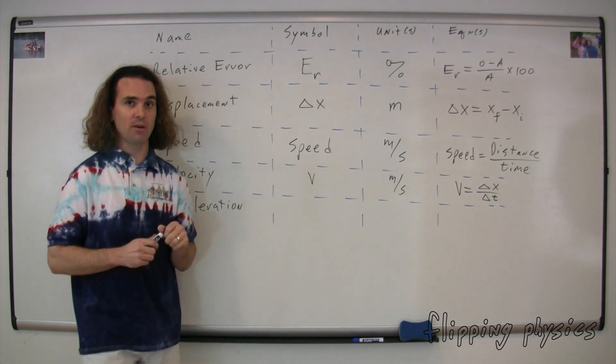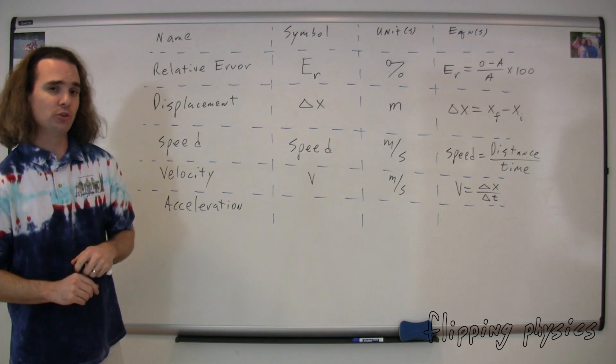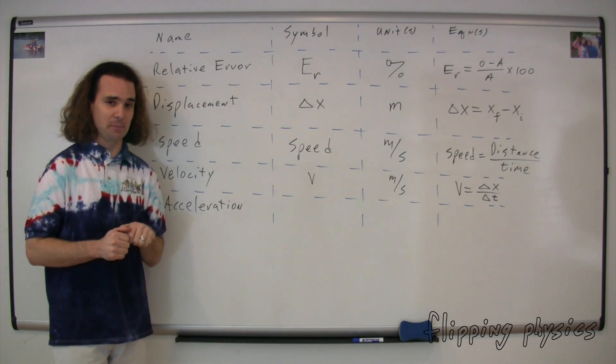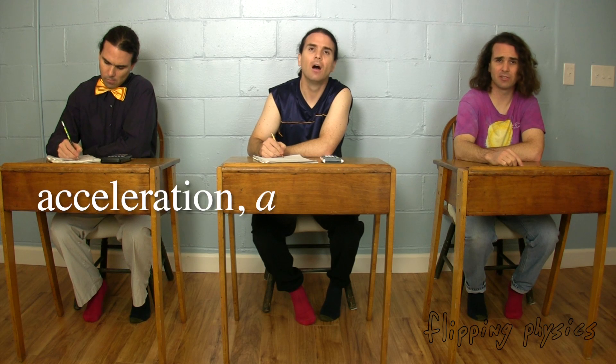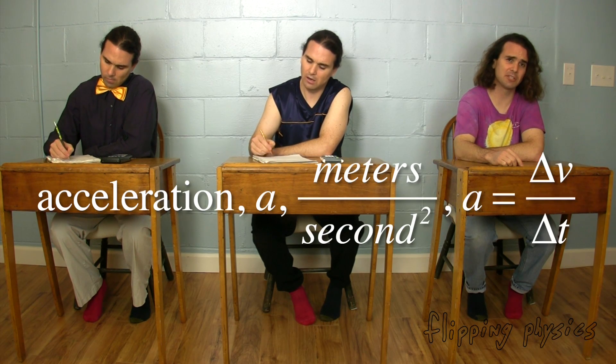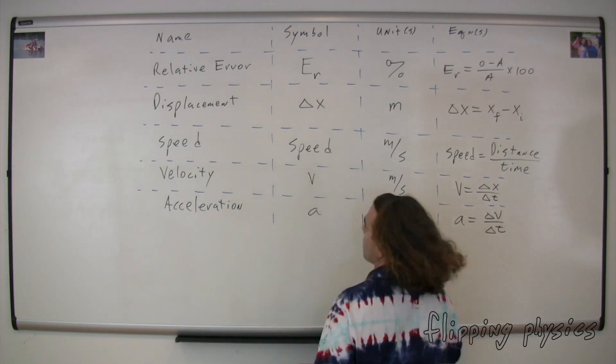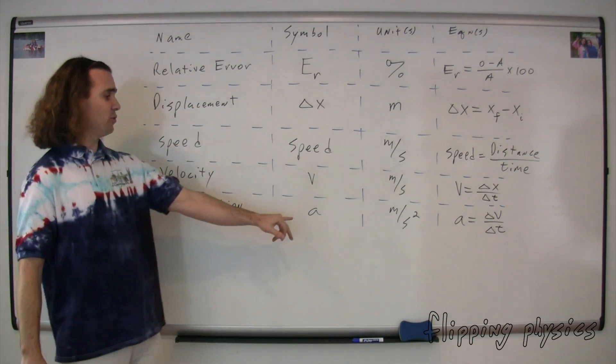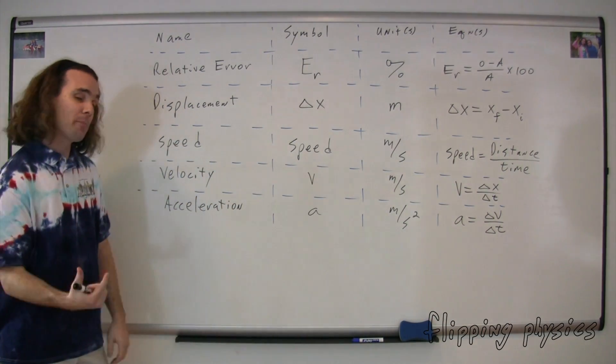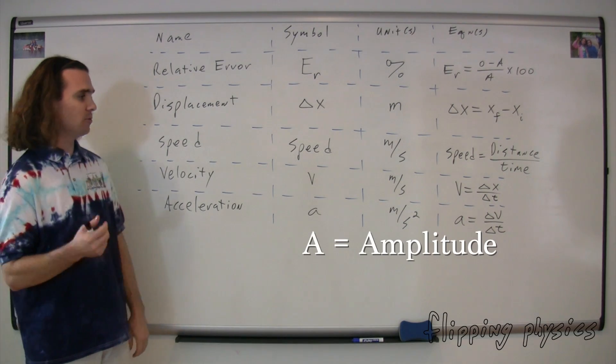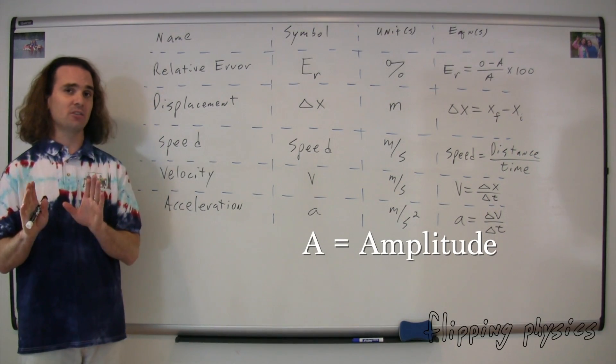Bo, could you please finish the table of friends? Sure, the symbol for acceleration is a, dimensions are meters per second squared, and acceleration equals change in velocity over change in time. Please be careful to use a lowercase a for acceleration, uppercase A stands for amplitude, and I believe at this point we've exhausted all of your questions.